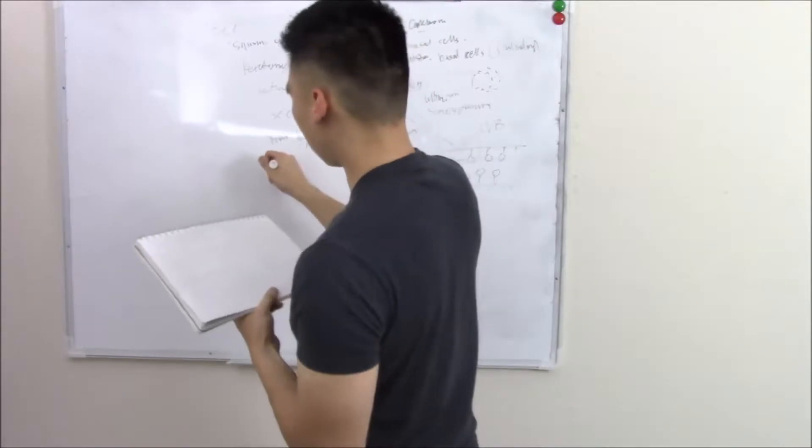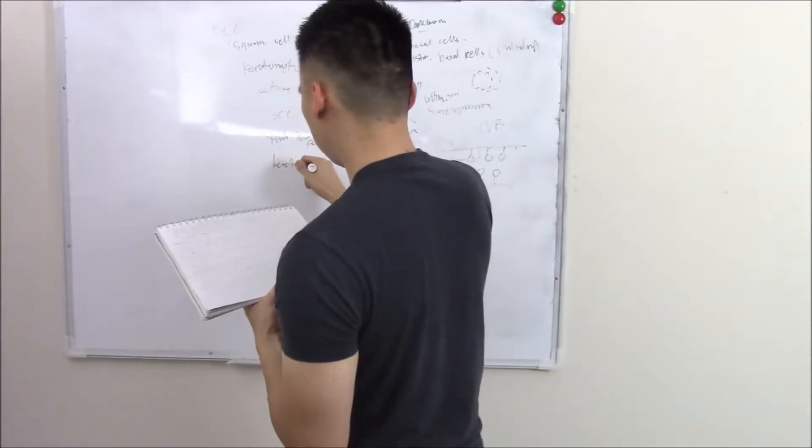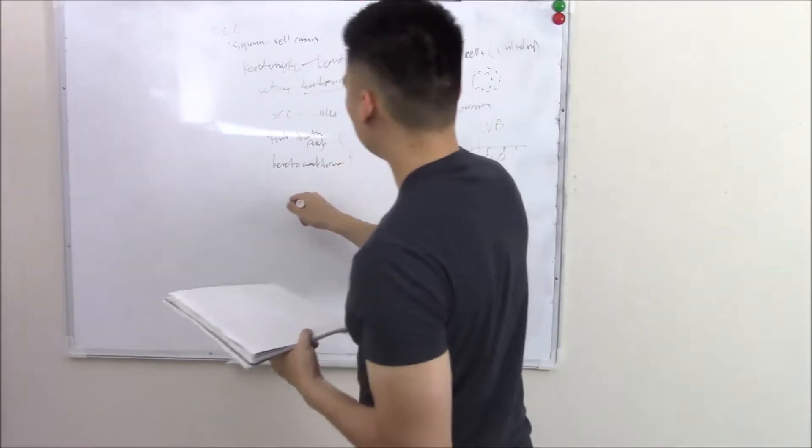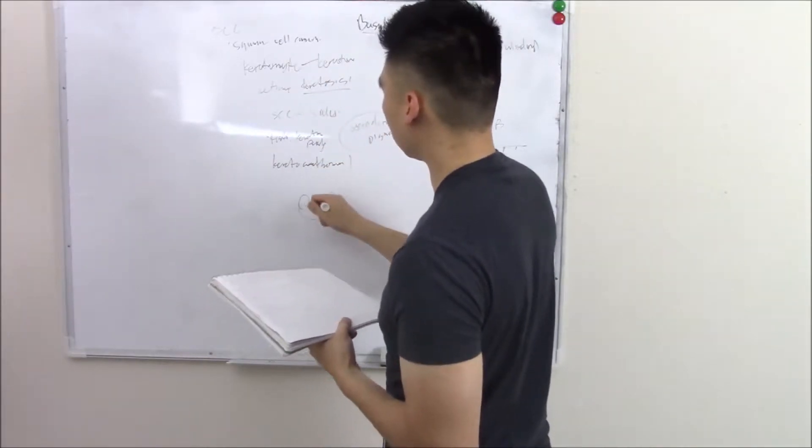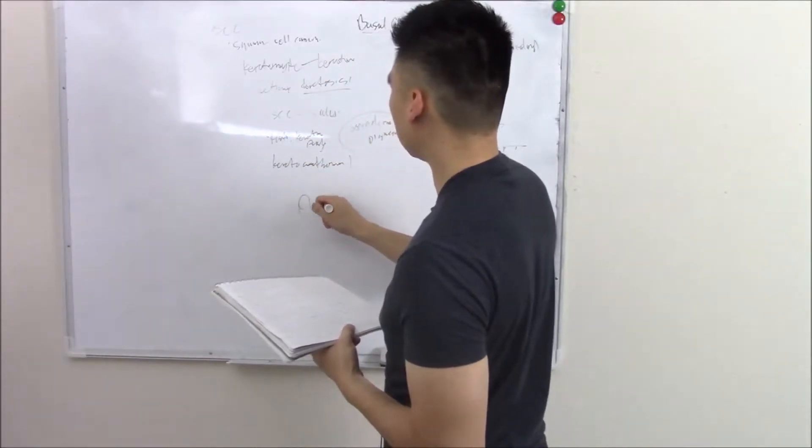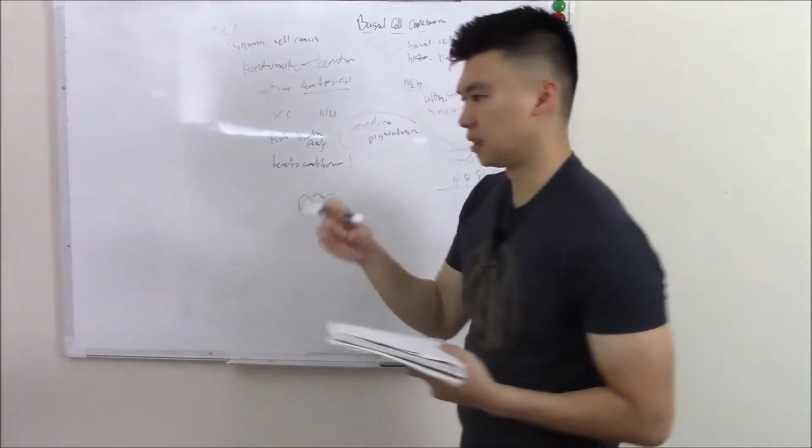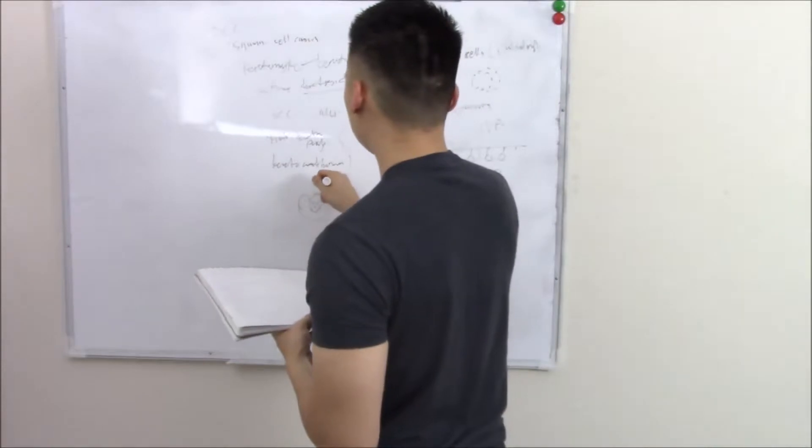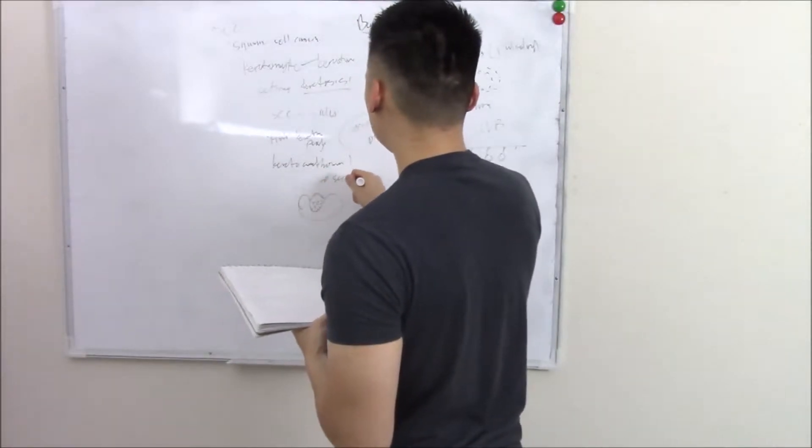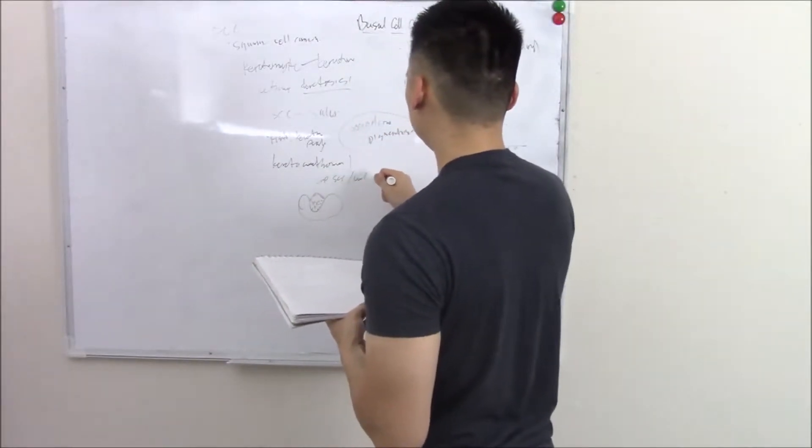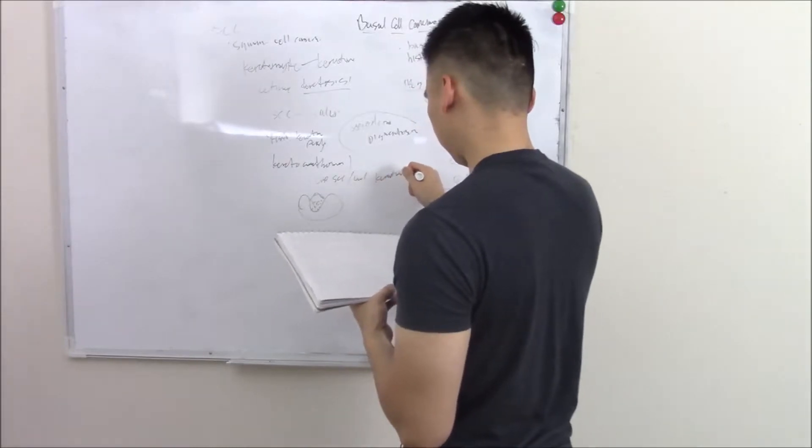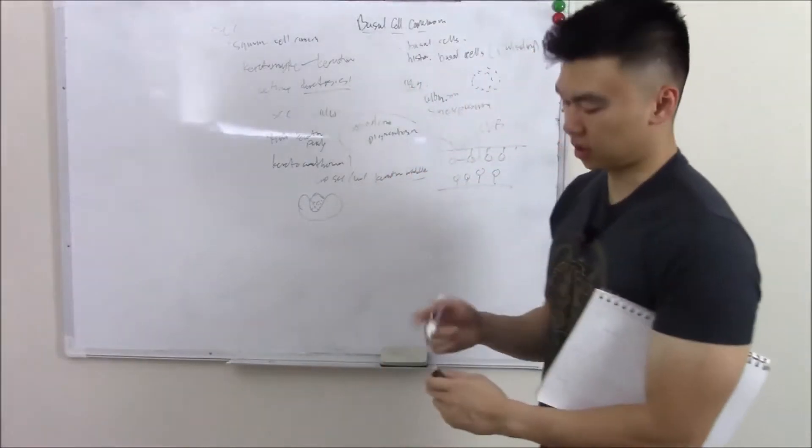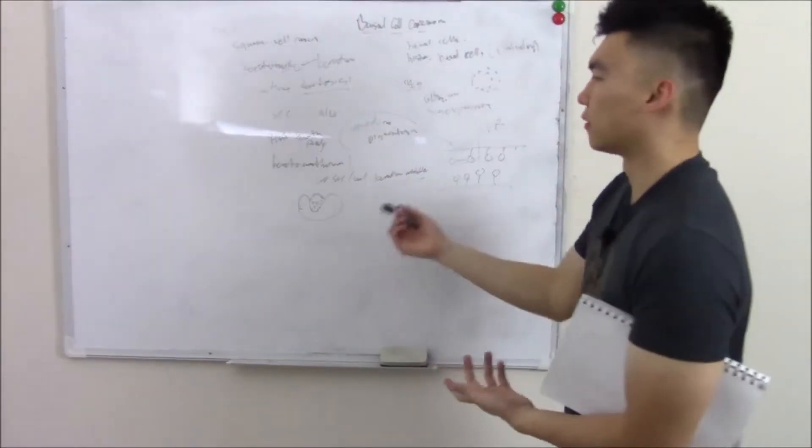Now there's a subtype of SCC called keratoacanthoma. And this is where you have a cup shaped lesion. And inside all that keratin debris deposits. And you have this keratin like a little pellet in the middle. I'll just write cup SCC with keratin middle. You might see it on a picture. Don't get too freaked out. This is a different form of SCC.